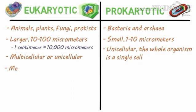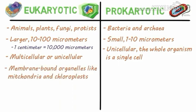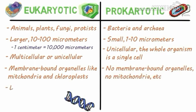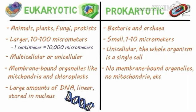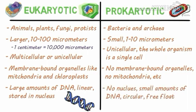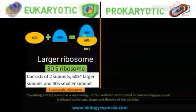Eukaryotes have membrane-bound organelles, whereas prokaryotes have no membrane-bound organelles. Eukaryotes have large amounts of DNA that is linear and stored in the nucleus, while prokaryotes have no nucleus and contain small amounts of circular DNA that floats freely in the cell.